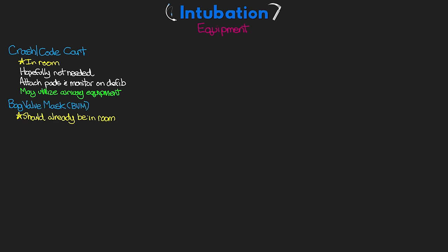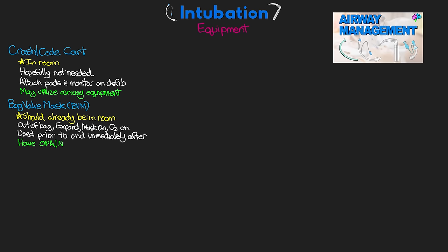Next is our bag valve mask. You should already have one in the room and on the crash cart, but make sure it's there and ready to go. Take it out of the bag, expand it, attach the mask, hook it up to oxygen, and set that to max flow. We will need to bag valve mask the patient prior to intubation as well as once the tube is placed, so this is vital.